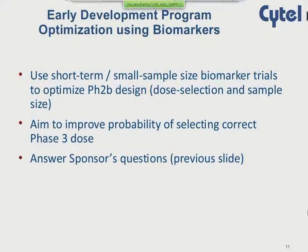What we think is new is applying this program simulation to the early development space and in particular optimizing the use of biomarkers. That involves considering short-term, small-sample-size biomarker trials to optimize the Phase 2 design based on the clinical endpoint — optimizing the selection of doses, the sample size, and improving the probability of selecting the correct dose for Phase 3.